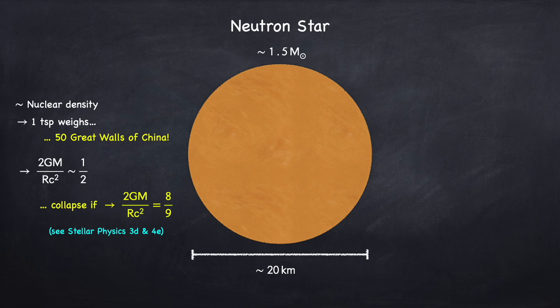The maximum neutron star mass which I'm not going to derive because I already covered it in stellar physics 3D and 4E is not actually known but it's expected to be somewhere between two and three solar masses. The reason we don't know the exact maximum neutron star mass is because we don't know what the equation of state of neutron star material is. This is one of the biggest unknowns in all of astrophysics.